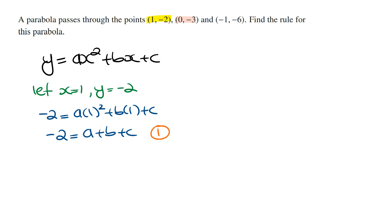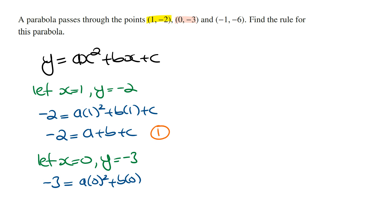Looking at the second coordinate (0, -3), we let x = 0 and y = -3. Subbing in: -3 = a(0²) + b(0) + c. Since a(0²) = 0 and b(0) = 0, this means -3 = c. So this is our second equation.